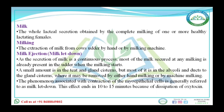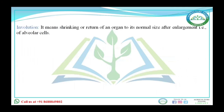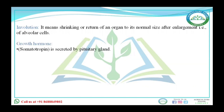Involution means shrinking or return of an organ to its normal size after enlargement — for example, after giving birth to a calf. During lactation the size of the mammary gland is increased, but during the dry period the mammary gland shrinks; there is also shrinkage of the alveolar cells. In the dry period the mammary gland returns to its original shape — that is involution.